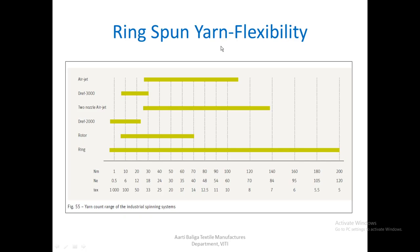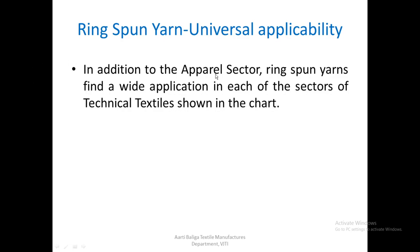The next point is universal applicability. Ring spun yarns are applicable in the apparel sector and also have wide application in the technical textile sector. This is because the yarn quality allows it. The new or alternate spinning systems produce yarns that do not find applications in some technical textile areas, because their quality cannot sustain the demands of those particular markets. But ring spun yarns can easily be used in many of these sectors.